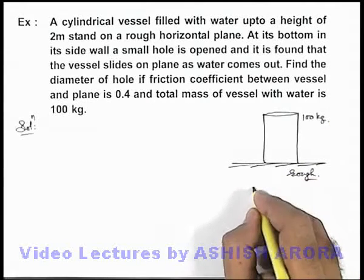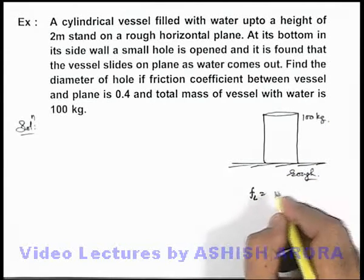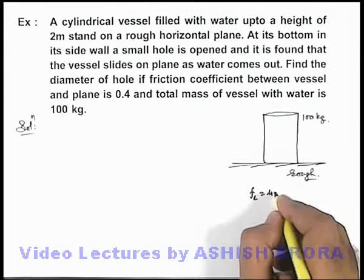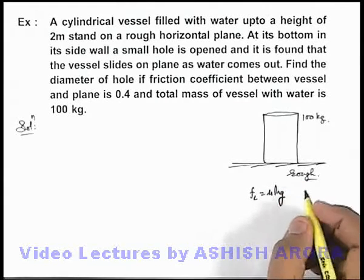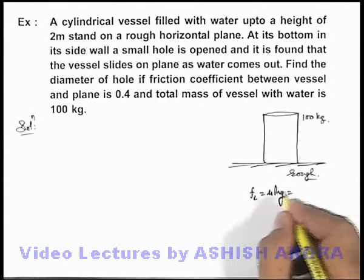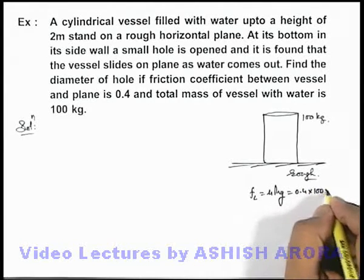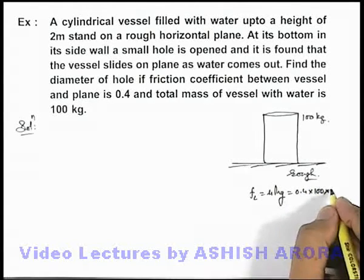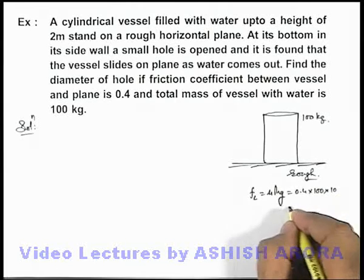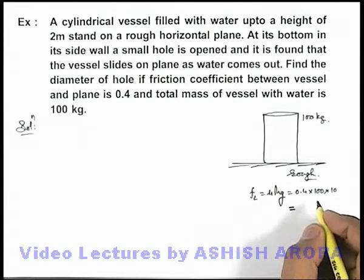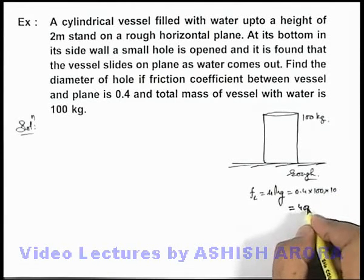Obviously on the ground if we find out the value of limiting friction it can be written as μN, so it'll be μmg, that'll come out to be 0.4 into 100 multiplied by the value of g we can take as 10 for calculations. So the limiting friction here we can say is 400 newtons.